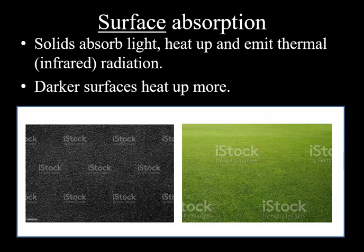Various surface types have different reflectivity, and hence, contribute to the albedo in different ways. Darker surfaces, such as asphalt, forests, or the ocean absorb more sunlight, whereas snow, grasslands, or cloud tops have high reflectivity, reducing the sunlight absorbed.